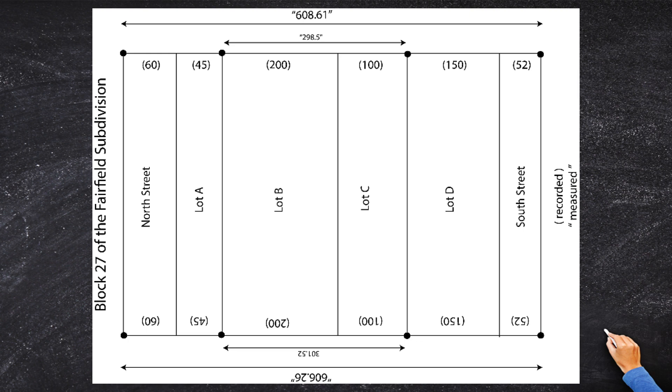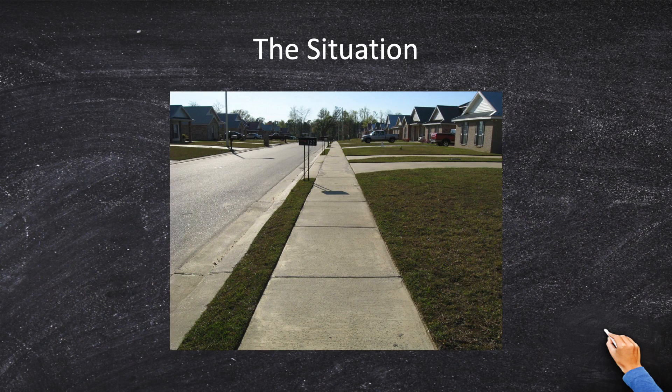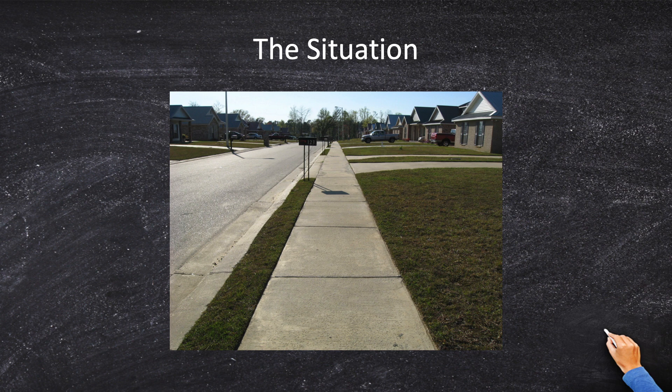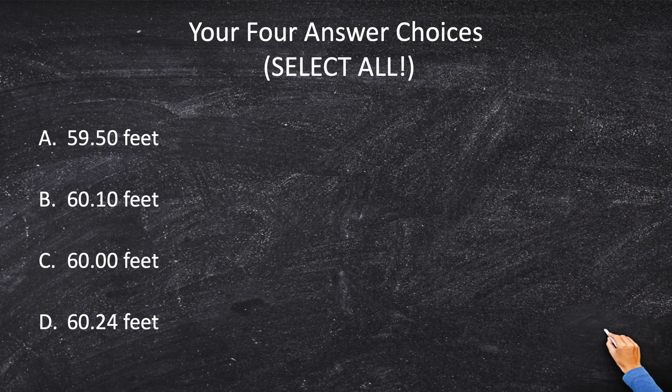I'm getting a little ahead of myself as usual. Instead of starting to do math and all the rest of this stuff, let's take a step back and think of the situation. The situation is that there is a subdivision called Fairfield Shores or something like that. And Fairfield Subdivision has one block. And within that block, there's a road, there's four lots, and there's another road. And you, the surveyor, are asked to find the true dimensions of North Street. When we have a math question, looking at the answers is typically not that helpful. But let's look at them anyways.